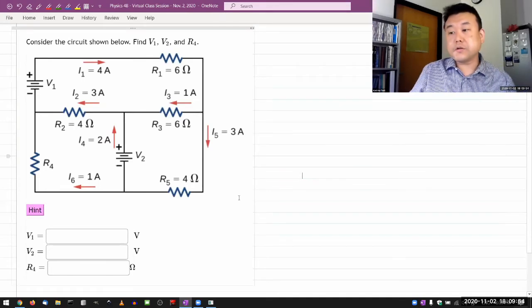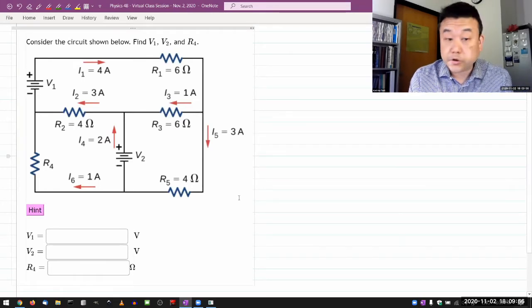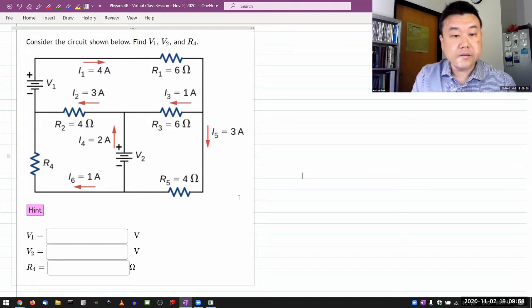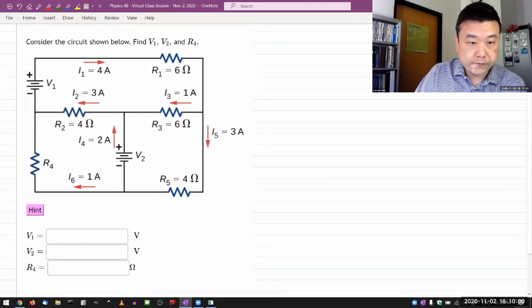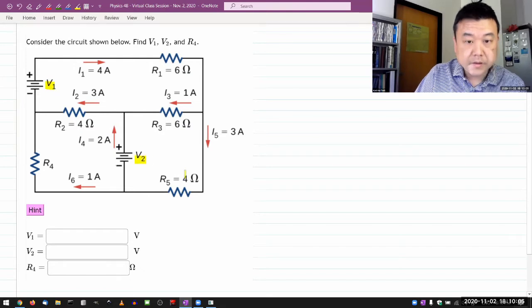All right. So this is what the question says. Consider the circuit shown below. Find the voltages V1 and V2 and the resistance value R4.